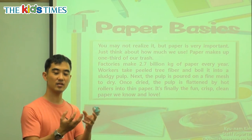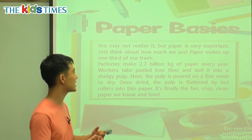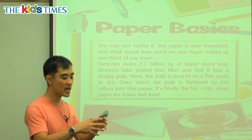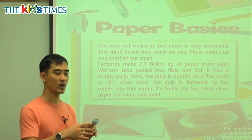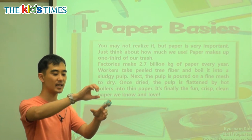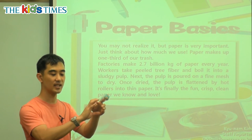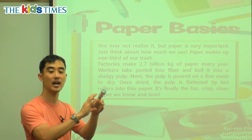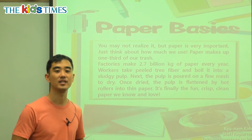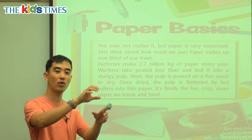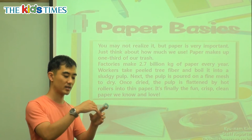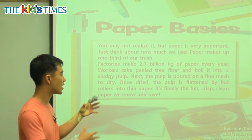Next, the pulp — that chunky, milkshake-looking thing — is poured onto a fine mesh. Mesh is like when we make tea: we pour the tea, the water goes through but the tea leaves are trapped. So a mesh lets only the water come out while all the big pieces stay to dry.